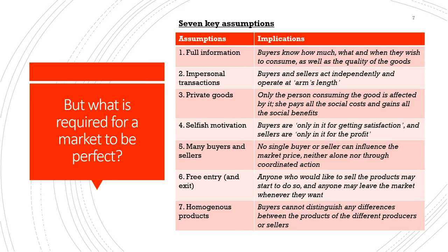Finally, the seventh assumption is that sellers are selling homogeneous products — there is not much product differentiation, so buyers cannot distinguish any difference between products of different producers or sellers. This is one reason why sellers cannot influence market price: because there is no product differentiation, intense competition among sellers settles the price at a stable rate, and consumers can clearly know what price they want to pay.